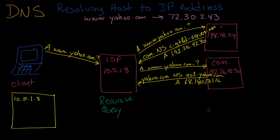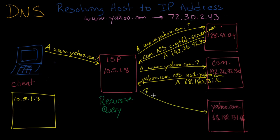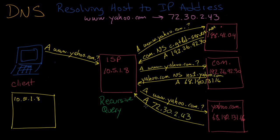So once again, your ISP reissues the request, this time to the yahoo.com name server, and asks the same question: what is the address for www.yahoo.com? This time the DNS server has an answer — it says the address is 72.30.2.43. Now your ISP has the answer and it can return that response back to you, and your computer is now able to contact the www.yahoo.com web server in order to deliver a web page to you.